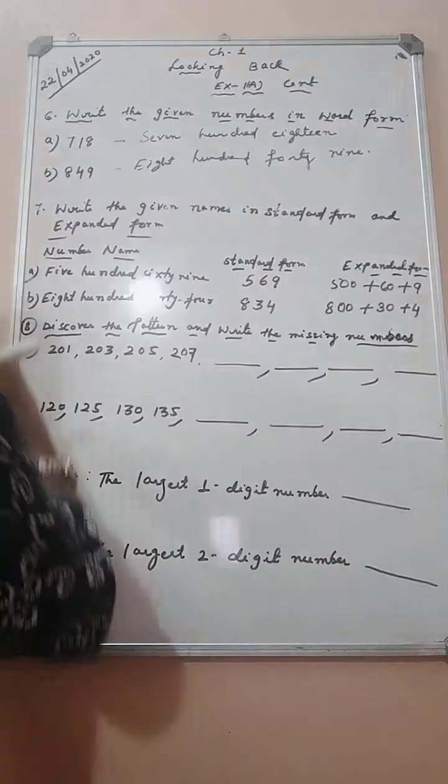Discover the pattern and write the missing numbers. You have to write the missing numbers after discovering the pattern. Here, few numbers are written and the numbers are increasing in a particular sequence. Let us see. Like 201, then 203, 205, 207.